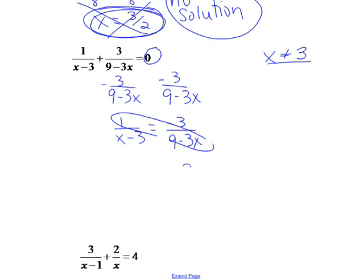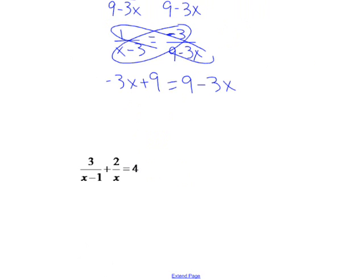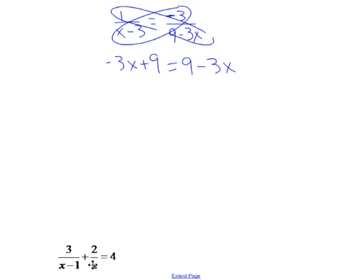Multiply, so we have 9 minus 3x equals 3 times, that's a negative 3, times x minus 3 is negative 3x plus 9. You may notice that these two things are equal already, but if I go ahead and keep solving it, and I add 3x to both sides, I get 9 equals 9, or 0 equals 0.